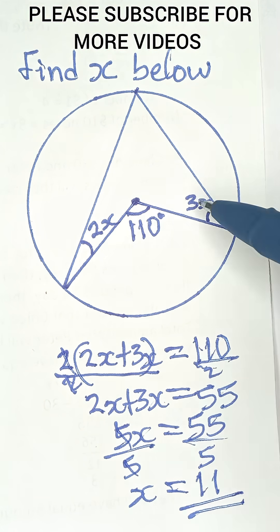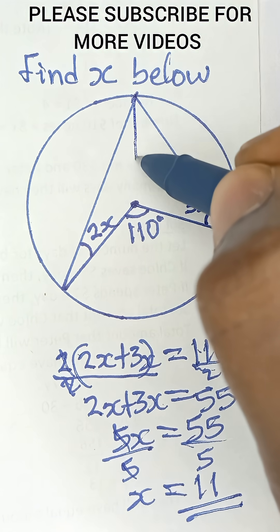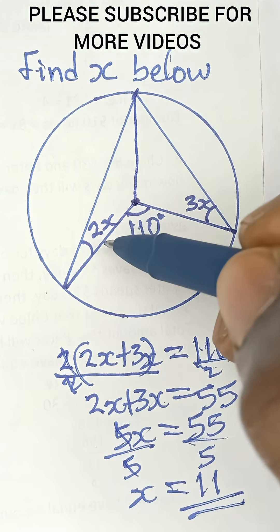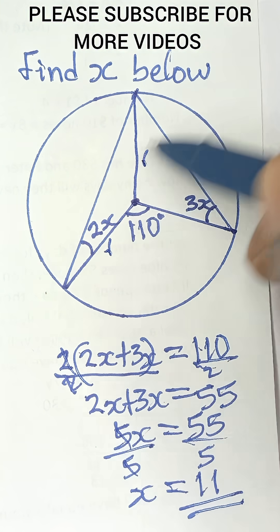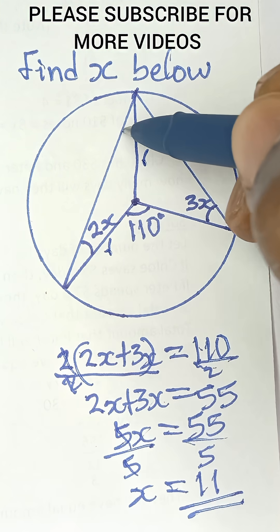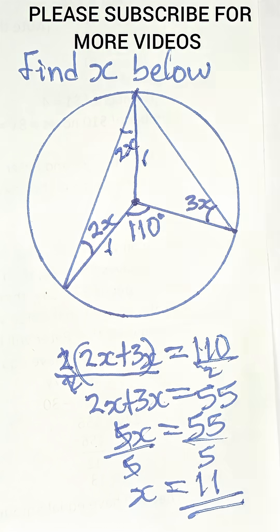Now, the reason why we're doing this simple trick is because if you trace this to this point here, you see that this is a radius and this is a radius, so that means this is an isosceles triangle, where this base angle is also 2x.